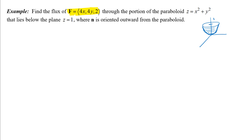N is oriented outward from the paraboloid, so my unit normal vector N will be pointing outward. I'll draw a couple of them here. Flux should not be hard to remember — this is connected to what we did with flux across curves. Flux across a surface is just going to be a surface integral of F dot N, and then the appropriate differential for a surface integral is D sigma.